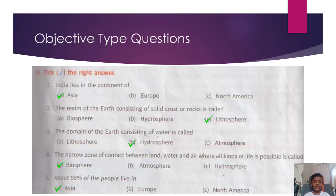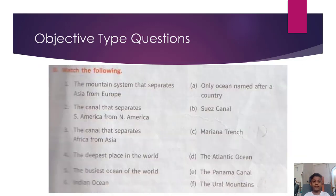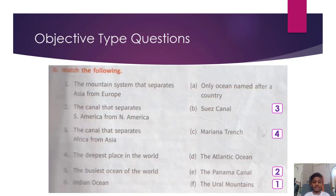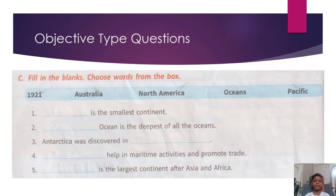5. About 58% of the people live in Asia. B. Match the following. 1. The mountain system that separates Asia from Europe — The Ural Mountains. 2. The canal that separates South America from North America — The Panama Canal. 4. The deepest place in the world — Mariana Trench. 5. The busiest ocean of the world — The Atlantic Ocean. The Indian Ocean is the only ocean named after a country.